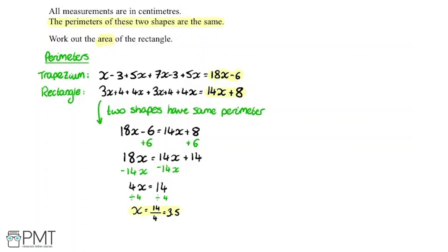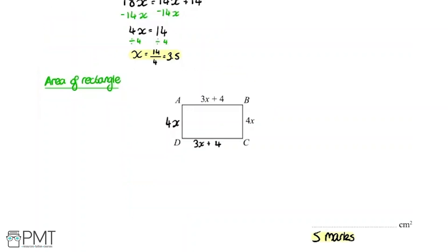Now we can move on to answering the question. The question has been to work out the area of the rectangle. Now for a rectangle we've got an equation for the area. So the area equals the length multiplied by width. And what it means by this is this side here is the length and this side here is the width. So we've got to do 4x multiplied by 3x plus 4.